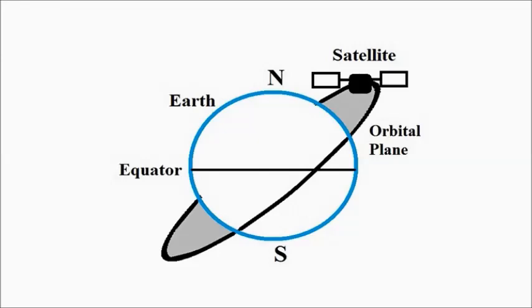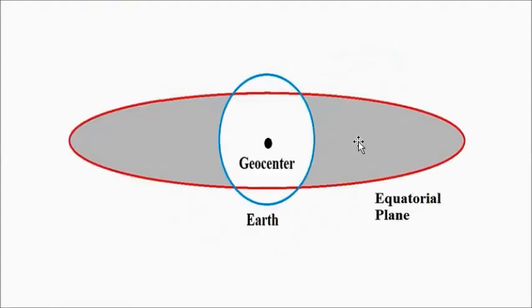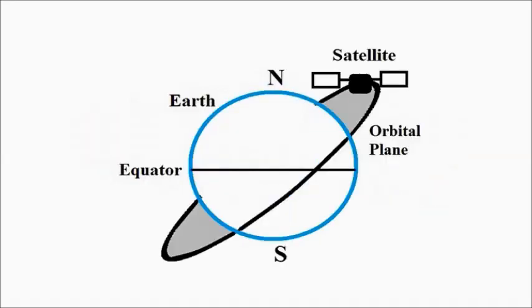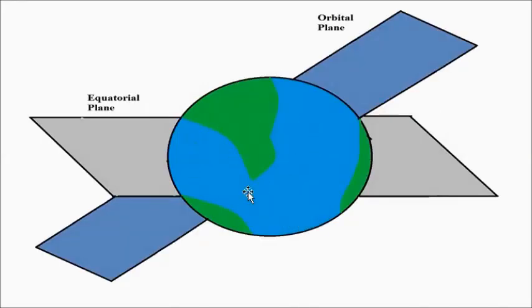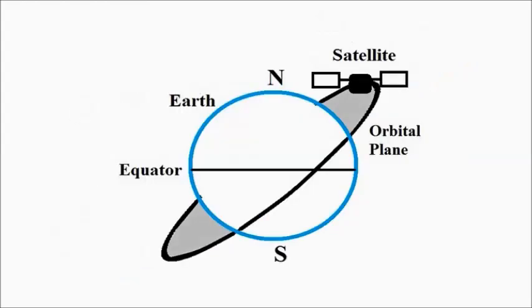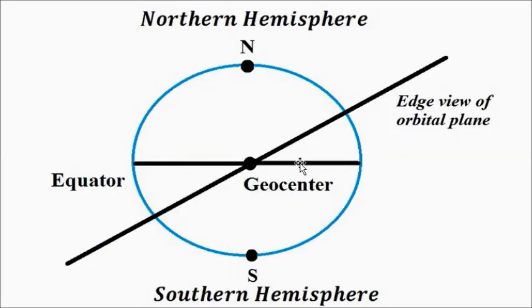Another important concept is the equatorial plane — the plane passing through Earth's equatorial line, dividing the Earth into two equal halves. The orbital plane is formed by the satellite's orbit, and the equatorial plane passes through the center of the Earth. The top portion is called the northern hemisphere and the lower portion is the southern hemisphere, with the geocenter at the center of the Earth.